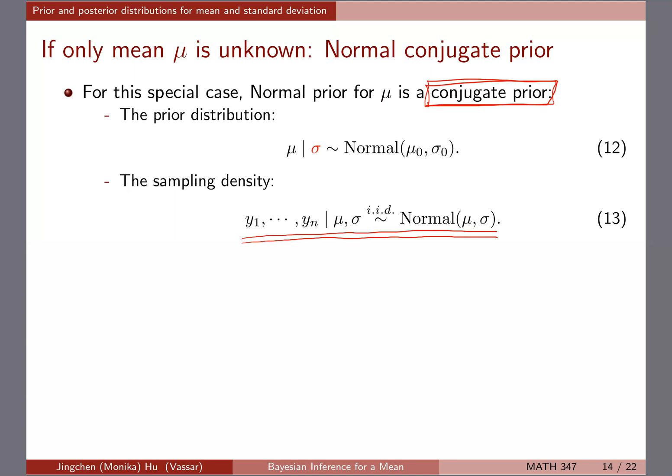The sampling density is normal, and we're treating only mu as unknown. If you have a data model of i.i.d. normal, fix sigma, and make inference about mu, then putting a normal prior on mu gives you a normal posterior for mu. Just like the beta-binomial case — data model is binomial, unknown parameter P gets a beta prior, and conjugacy guarantees a beta posterior — here conjugacy guarantees a normal posterior.